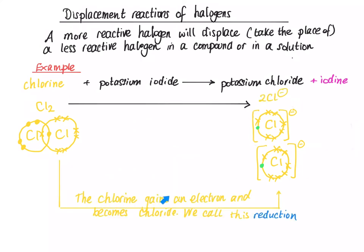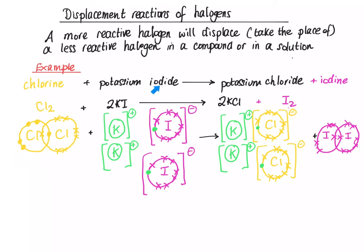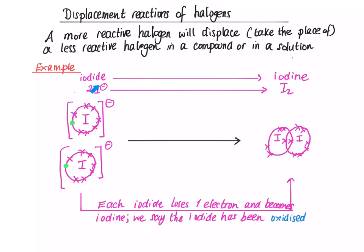So, the chlorine gains an electron, the green one, and becomes chloride. This is called reduction. So, we say the chlorine has been reduced to chloride. If we look at what happens to the iodide. The iodide started as I⁻, becomes I₂. And so, each iodide loses one electron, this green one, that goes on to the chlorine, that makes the chlorine into chloride, and becomes iodine. We say the iodide has been oxidised. So, losing an electron is oxidation.